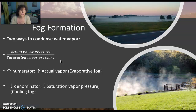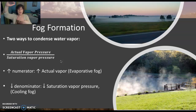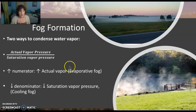We're going to talk about the saturation vapor pressure part of the equation first. If you want to decrease the denominator and decrease the saturation vapor pressure, remember you're basically decreasing the temperature. Recall our graph — temperature on the x-axis, vapor pressure on the y-axis — if you want to decrease vapor pressure, you decrease the temperature. So we're basically talking about cooling fogs first.